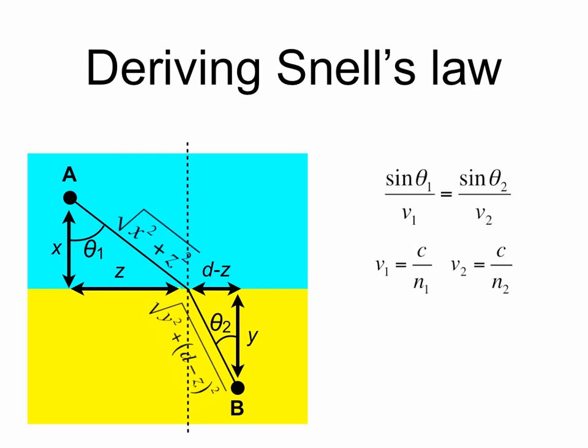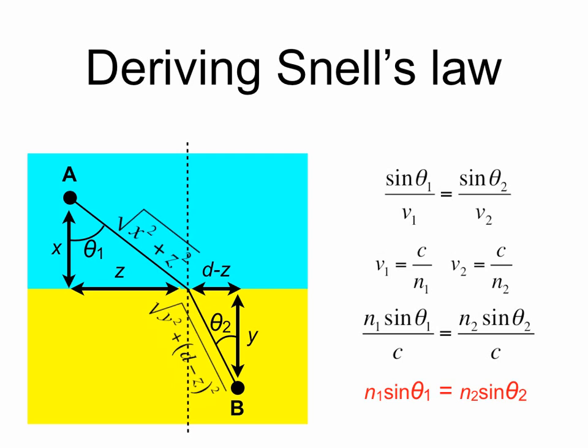The index of refraction n1 is defined as the ratio of the speed of light in vacuum c to the speed in the medium, so v1 equals c over n1, and v2 equals c over n2. Substituting these into our relation gives n1 sine theta1 over c equals n2 sine theta2 over c. The c's cancel out, leaving us with Snell's Law: n1 sine theta1 equals n2 sine theta2.